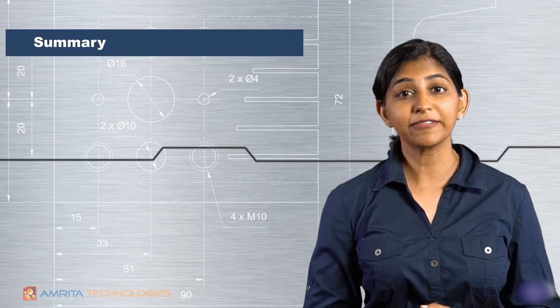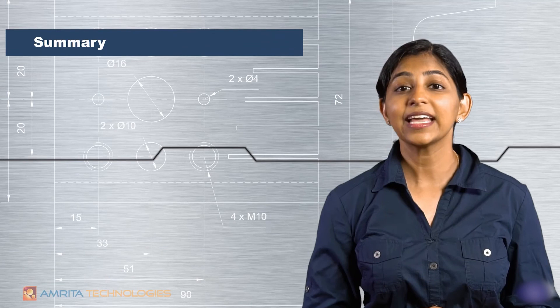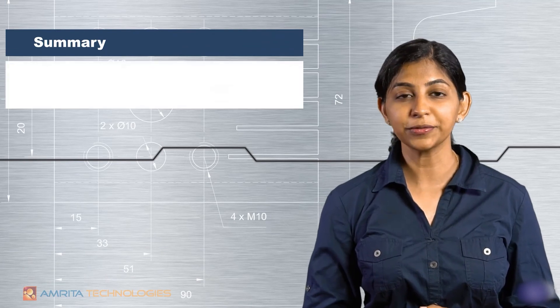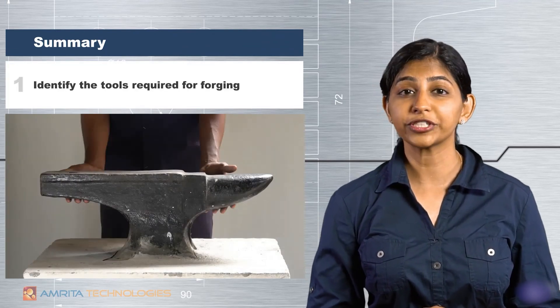With that, we have come to the end of this session. In this session, we have learned to identify the tools required for forging and forge an octagonal flat chisel.